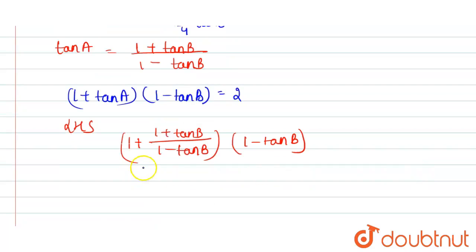That is 1 plus 1 plus tan B divided by 1 minus tan B into 1 minus tan B as it is. Now take the LCM of 1 minus tan B here. So we get 1 minus tan B plus 1 plus tan B divide by 1 minus tan B into 1 minus tan B as it is.